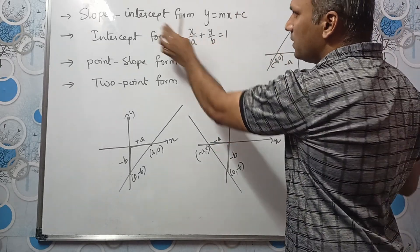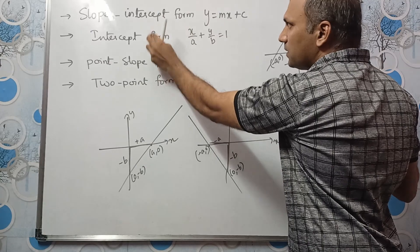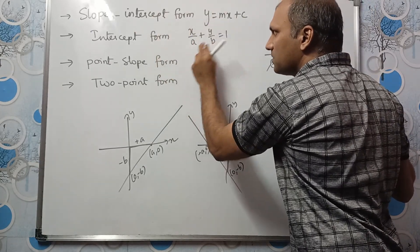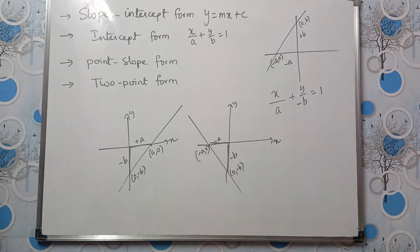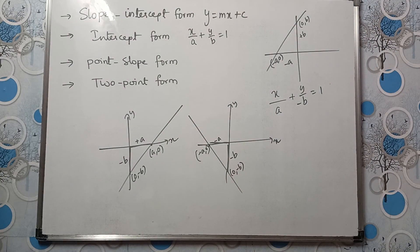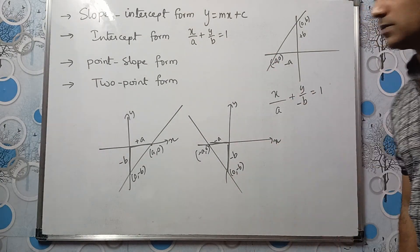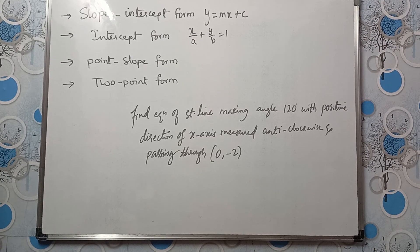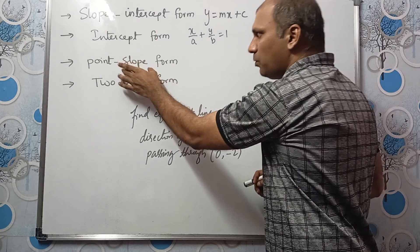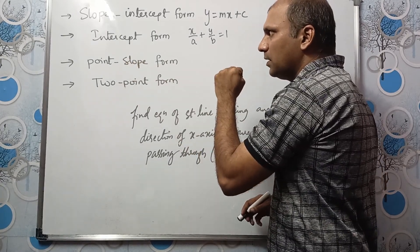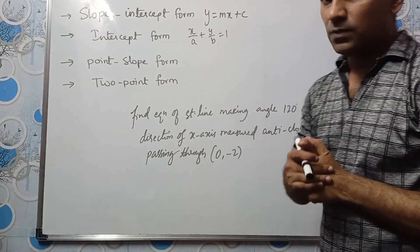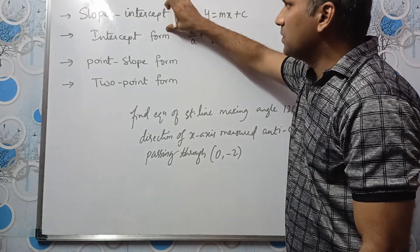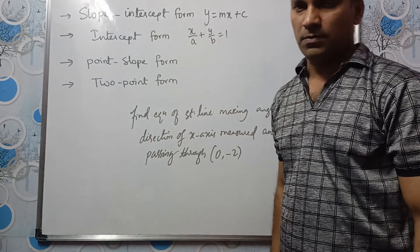So slope-intercept form is y = mx + c, and intercept form is x/a + y/b = 1. Before learning point-slope form, we will do one problem of slope-intercept form and one problem of intercept form so the concepts will be more clear.